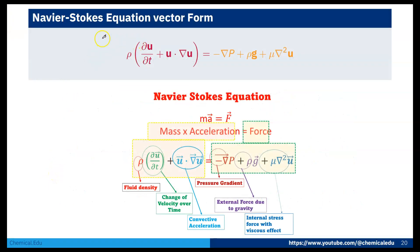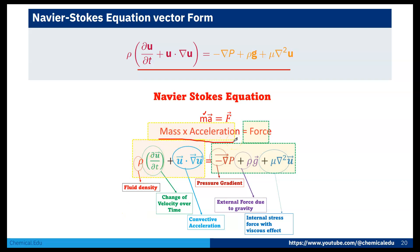Summarizing, the Navier-Stokes equation in vector form is: ρ(∂u/∂t + u·∇u) = −∇p + ρg + μ∇²u. The Navier-Stokes equation is nothing but mass into acceleration equals net force, expressed per unit volume. Here ρ is fluid density; ∂u/∂t is the local acceleration; u·∇u is the convective acceleration; −∇p is the pressure gradient term; ρg is the body force due to gravity; and μ∇²u is the viscous term representing internal stress force.